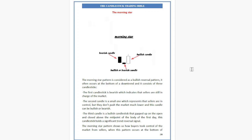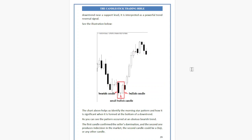When this pattern occurs at the bottom of a downtrend near a support level, it is interpreted as a powerful trend reversal signal. The chart helps us identify the Morning Star pattern and how it is significant when formed at the bottom of a downtrend. As you can see, the pattern occurred during an obvious bearish trend. The first candle confirms the seller's domination and the second one produces indecision in the market.